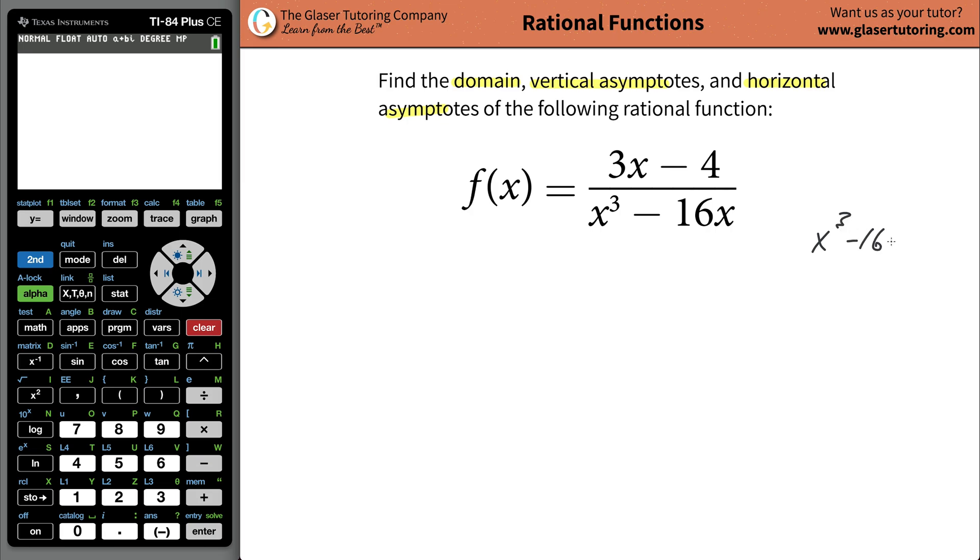You say x cubed minus 16 equals zero. And what you're going to do is solve that. You do x cubed minus 16x, you're going to add the 16x to both sides. And you're going to have x cubed now equaling 16x. Then what you could do is you realize you have an x on this side, you have an x cubed on that side. So you could basically divide out an x, and you get x squared equaling now 16. So then what you can do is you can simply square root both sides.